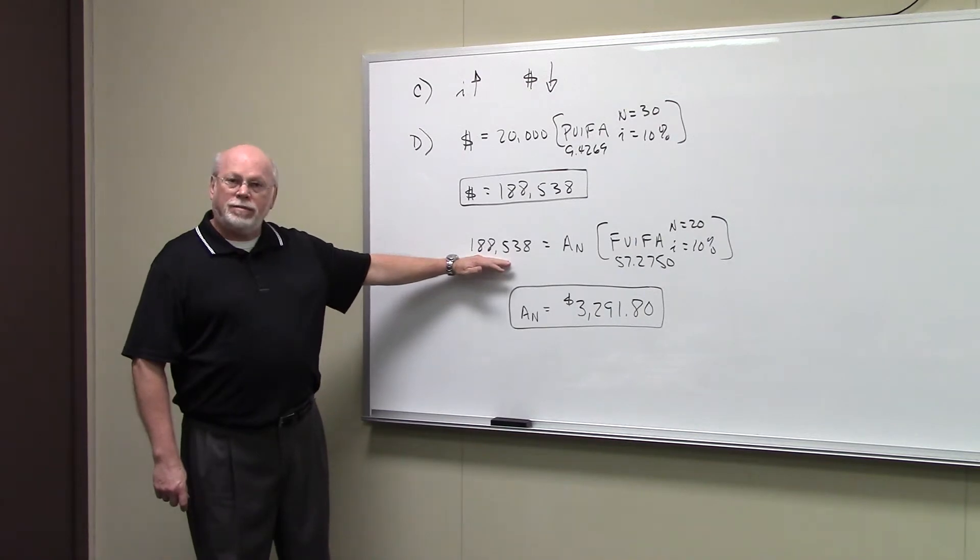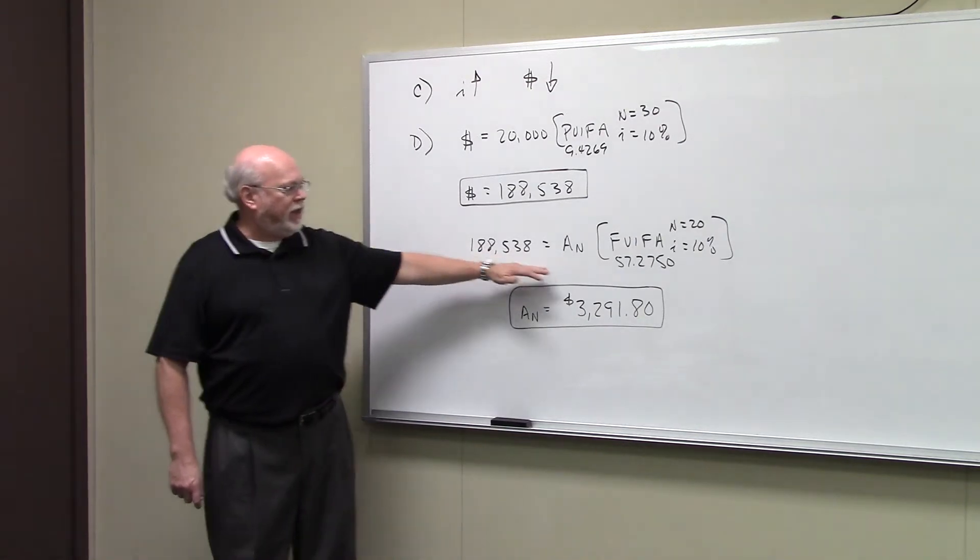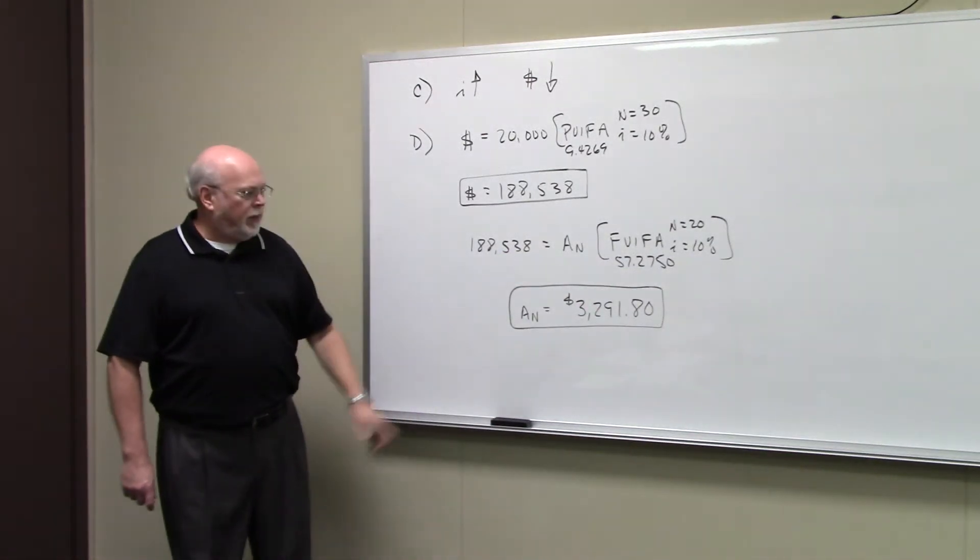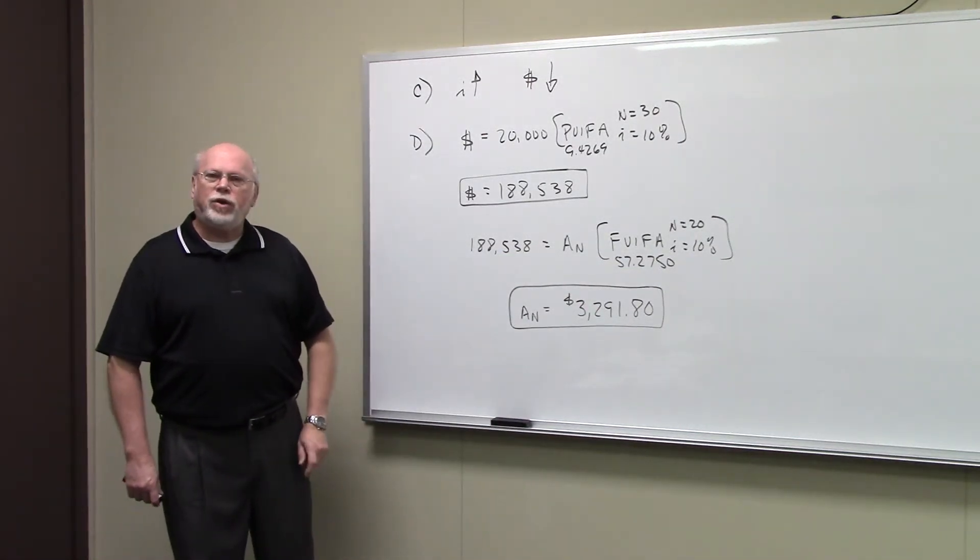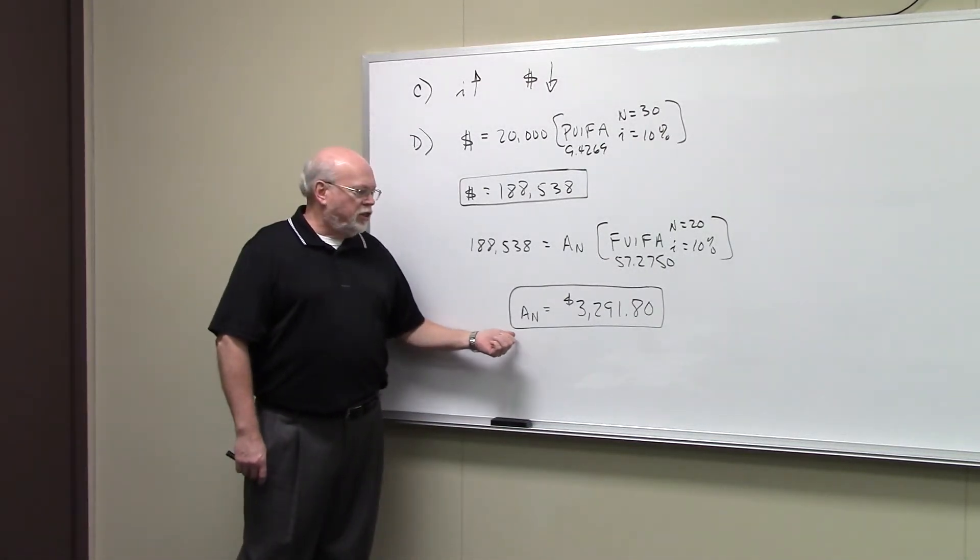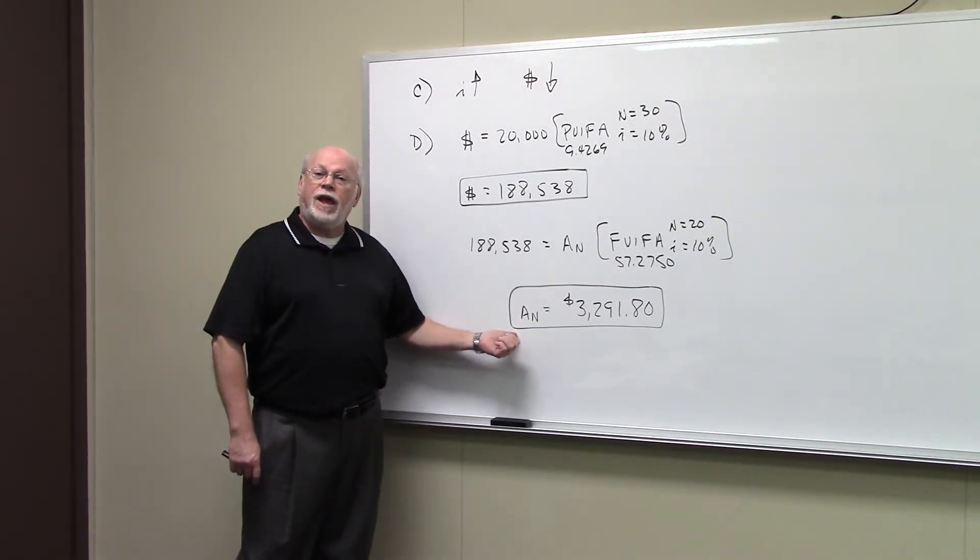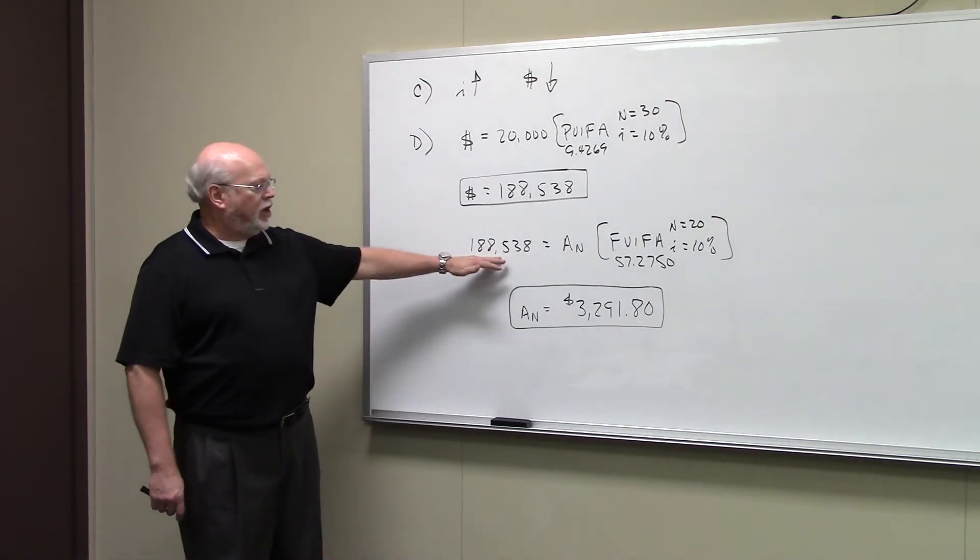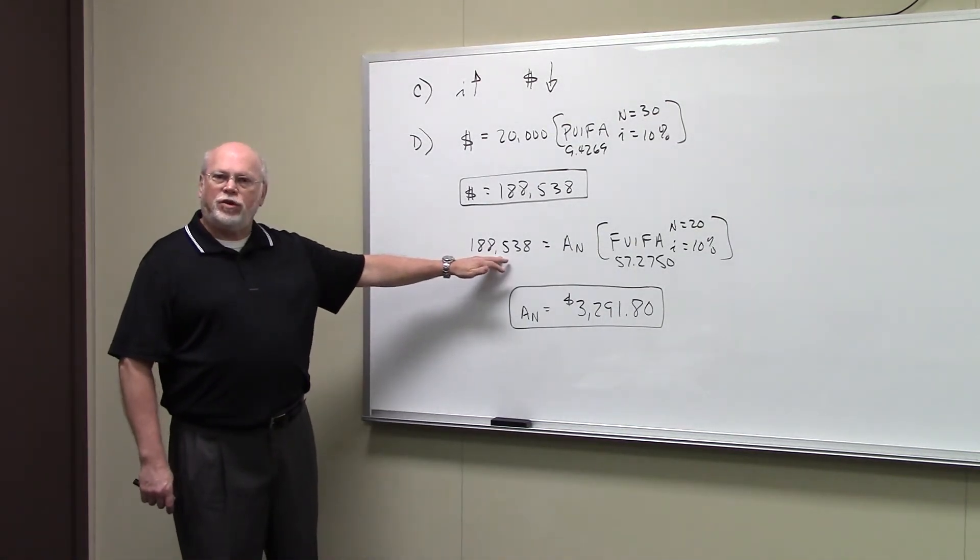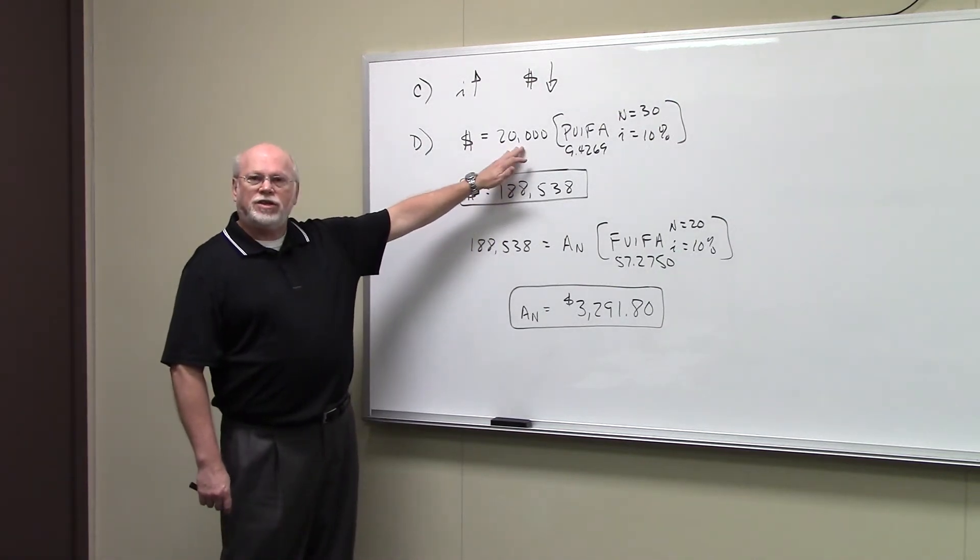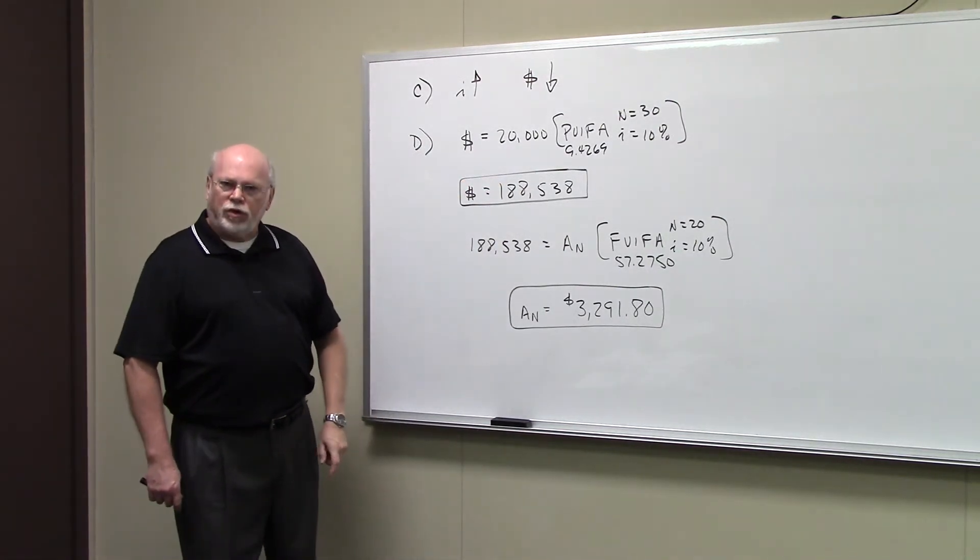You have your big dollar amount, $188,538, divide by 57.2750 and you get $3,291.80. So if you save $3,291.80 every year for 20 years and all your money earns 10% interest, 20 years from now you'll have $188,538. And from that account you could withdraw $20,000 a year for 30 years.